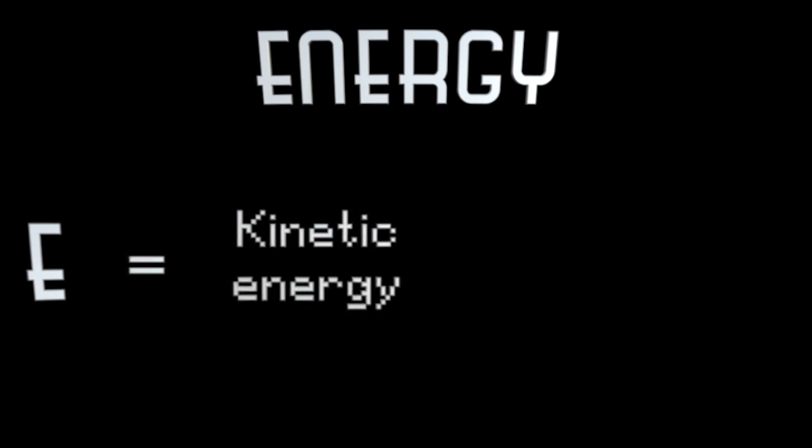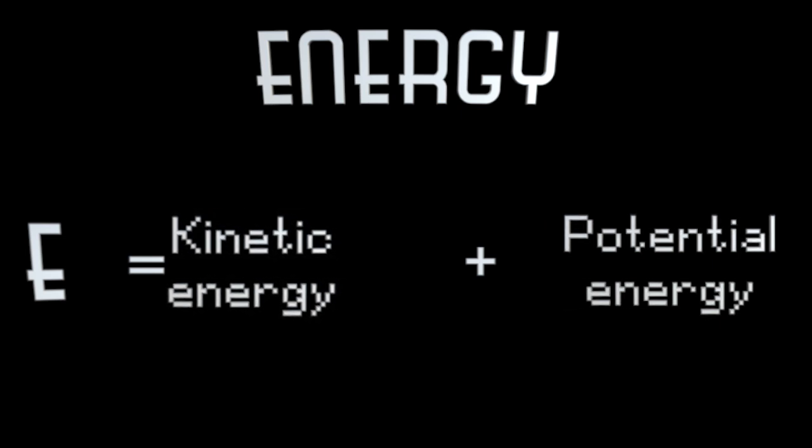Energy. So fundamental of a concept, most of us learn about it at school. We are told that all physical systems have two energy components, kinetic and potential, with the kinetic part equal to half mv squared.